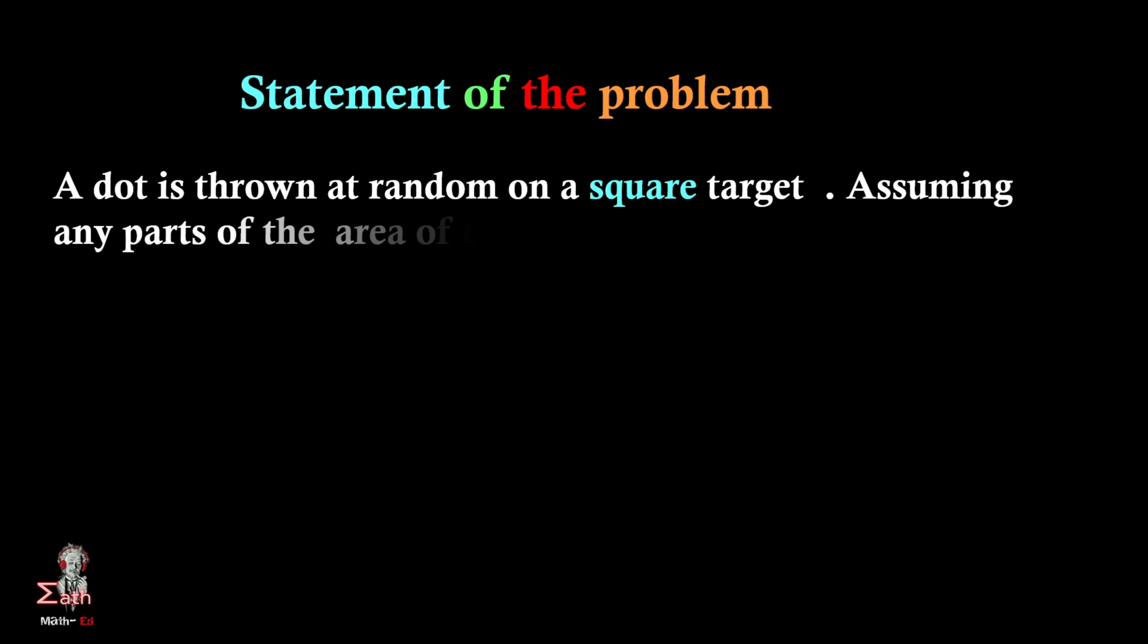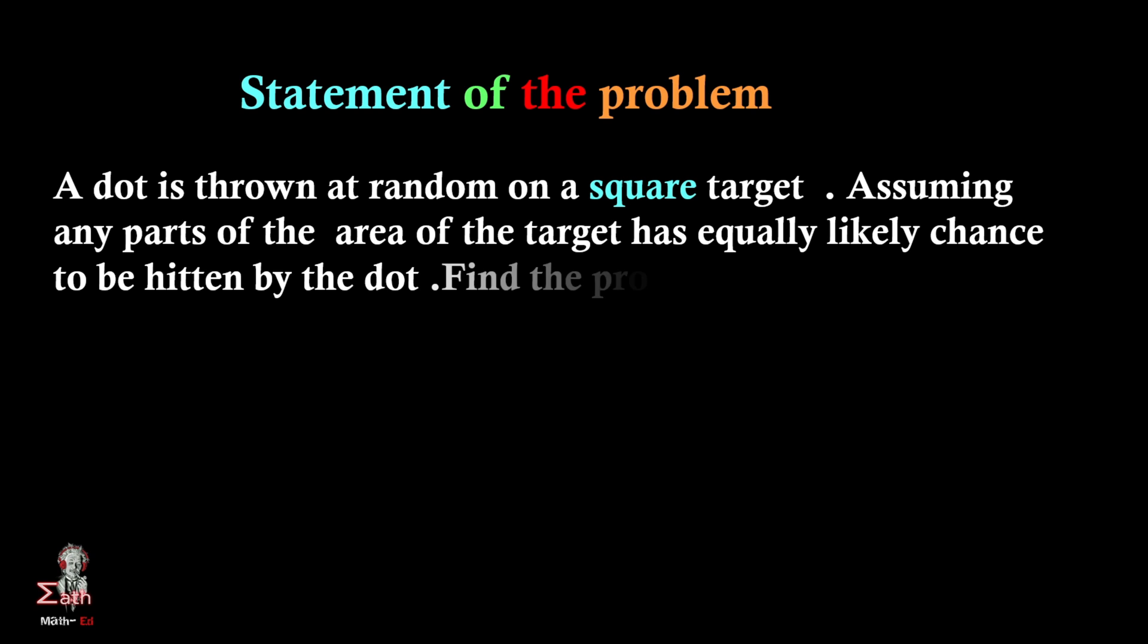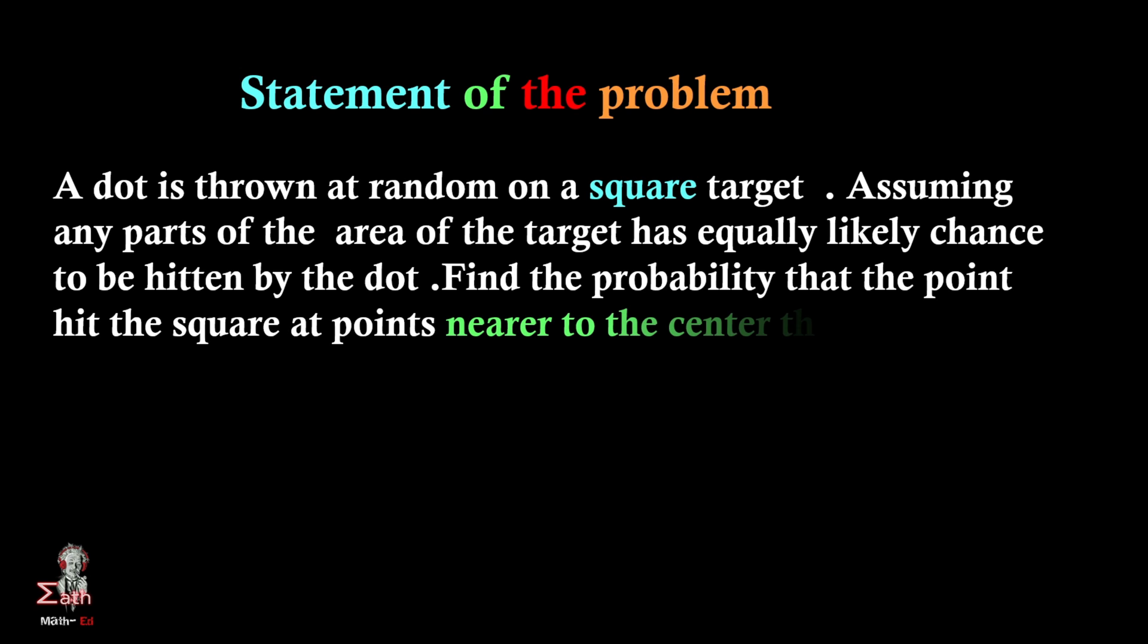A dot is thrown at random on a square target. Assuming any part of the area is equally likely to be hit by the dot, find the probability that the dot hits the point on the square target that are closer to the center than any of the sides.